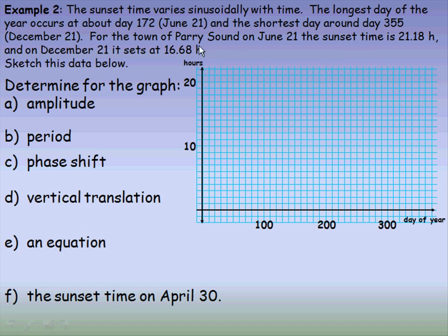The data we're given is for the town of Perry Sound. On June 21st the sun sets at about 21.18 hours—that's not 21 hours and 18 minutes, the hour has been changed into a decimal hour. On December 21st it sets around 16.68 hours. We're going to sketch the data, gather this information, write an equation, and then answer this question.